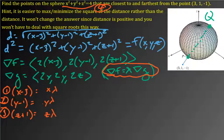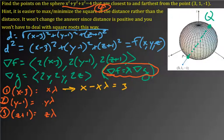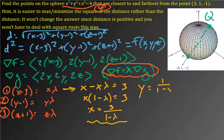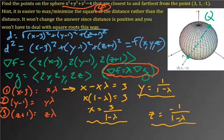So I'm going to do that. For the first equation, I move the X·lambda over and the 3 to the other side, then factor out X: X times (1 minus lambda) equals 3, so X equals 3 over (1 minus lambda). They're all kind of like that. Y ends up being 1 over (1 minus lambda), and Z would be negative 1 over (1 minus lambda). Now we can take these three expressions and plug them into the sphere equation to solve for lambda.